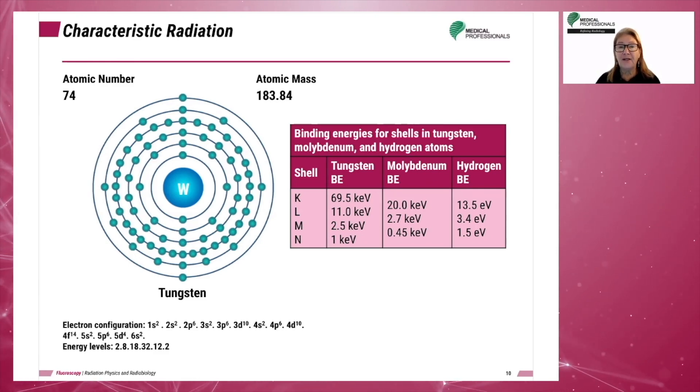For example, if the kVp is set at 90, characteristic radiation will be formed. Let's assume the incoming electron interacting with the tungsten atom's K shell has an energy of 90 keV. The K shell electron has a binding energy of 69.5 keV. Suppose an N-shell electron replaces the ejected K-shell electron. The resulting X-ray photon would have an energy level of 79 keV. This is found by subtracting the binding energy of the replacement electron from the energy of the electron interacting with the K-shell.